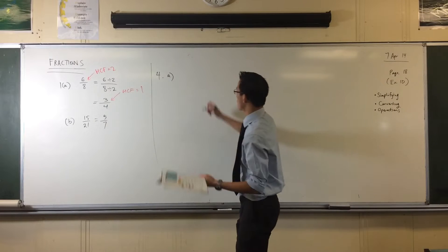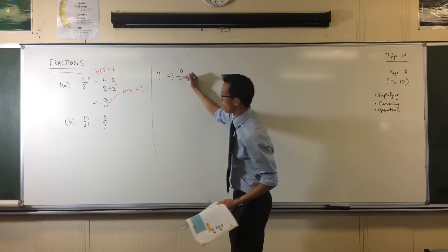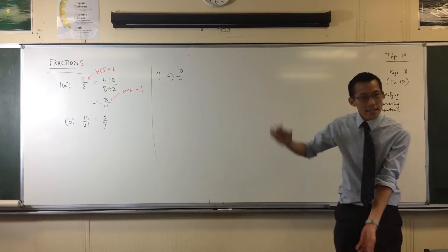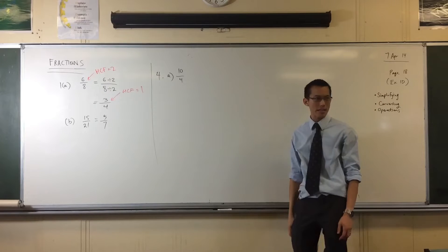Write the following as mixed numerals. The first thing you've got is 10 over 4. Now this is an improper fraction. Why is it improper?